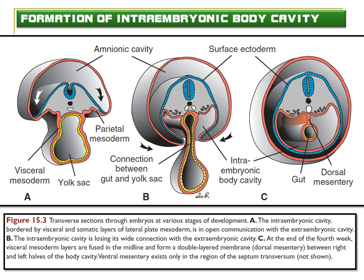The gut tube is suspended within the future abdominal cavity by a dorsal mesentery, except in the region of the septum transversum. The gut tube is attached to the anterior abdominal wall only in the region of the septum transversum. At the region of the midgut, the gut tube communicates with the yolk sac, so it is not completely bounded at that level.